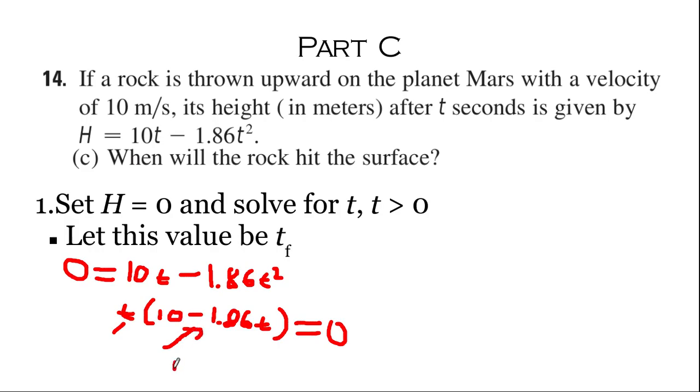So we set this one equal to zero: 10 minus 1.86t equals zero. Let's continue up here. We move the 1.86t over to the other side by adding 1.86t to both sides, so 10 equals 1.86t. Then we solve for t by dividing by 1.86 on both sides.